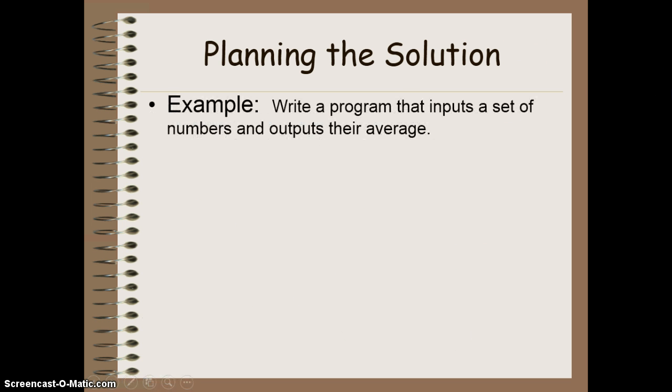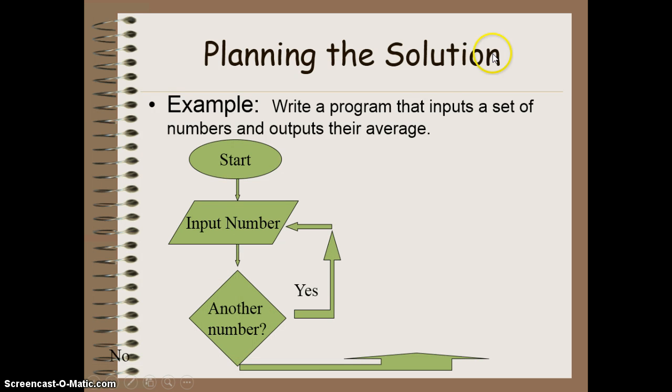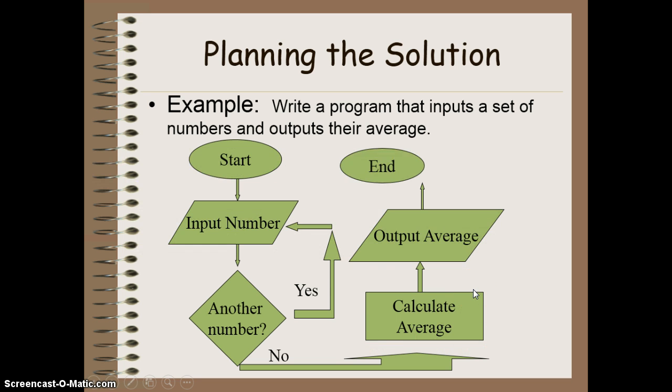Here's an example of a program that inputs a set of numbers and outputs their average. Obviously first, we need to start. Then we need to input our number. We see if we have another number. If so, we repeat. Here's a decision structure leading to a repetition structure here. We keep repeating until we no longer need another number, in which case we take this branch of our decision structure, and we go to calculate our average, output the result, and finally end that particular method.